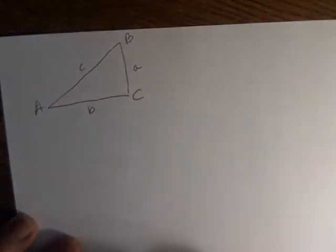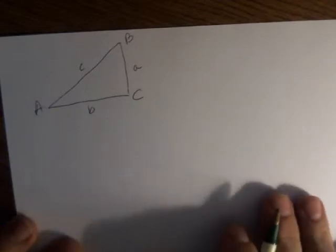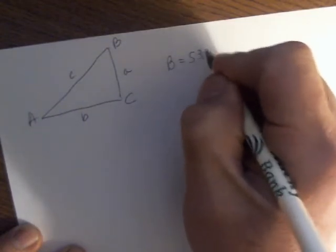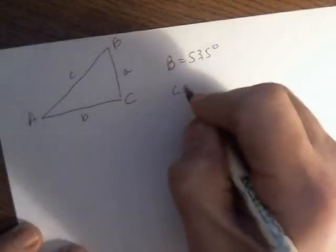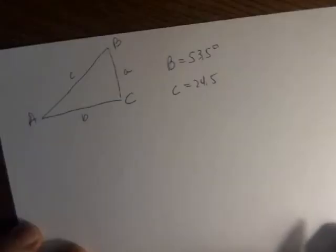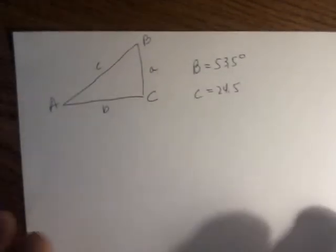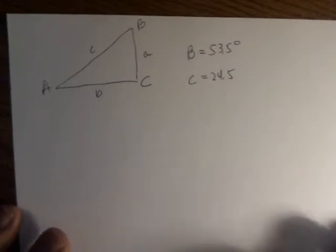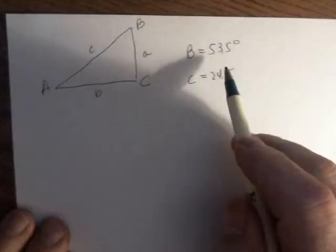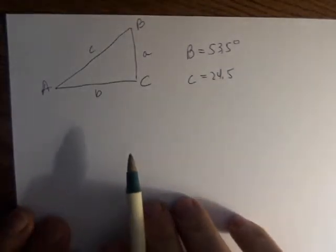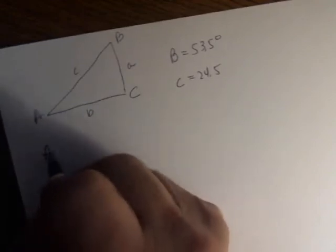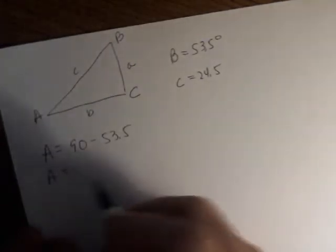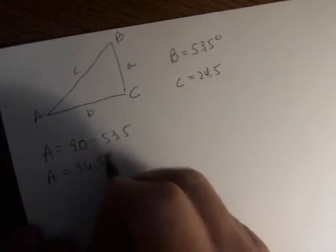And you've got your three sides. Now, let's say that we're given angle B, and it's 53.5 degrees, and side C is 24.5. The key to working with the trigonometry is to first choose your angle of reference. Now, I'm given angle B, but I automatically know angle A because the angle A is 90 minus 53.5. So, angle A would be 36.5 degrees.